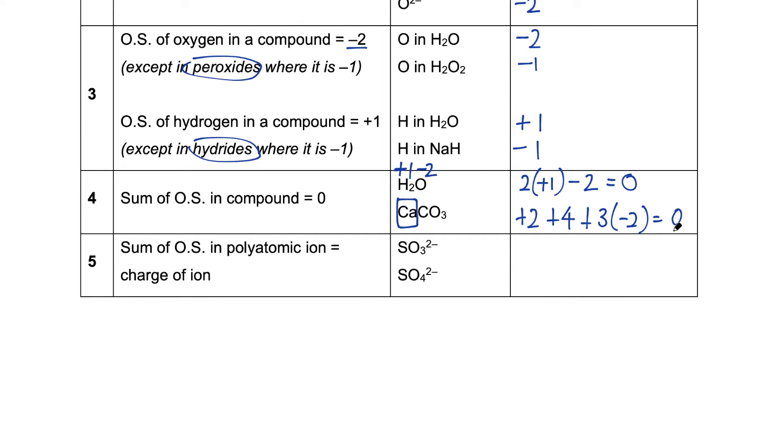The last rule states that the sum of oxidation states in the polyatomic ion is the charge of the ion. Here we have two examples, sulfite and sulfate. In sulfite, the oxidation state of sulfur is plus four. The oxidation state of oxygen is minus two, and we have three of that. And it should add up to the charge of the ion, which is minus two.